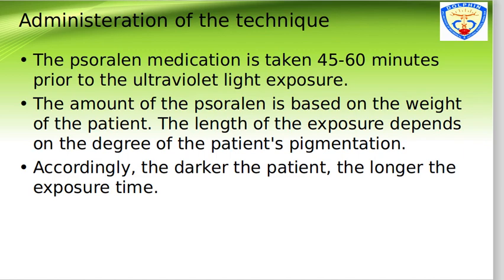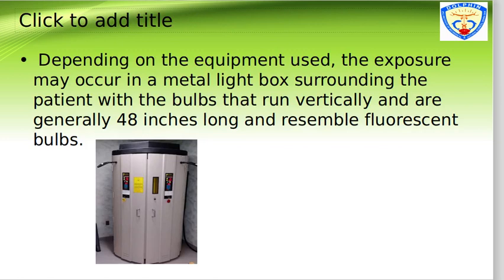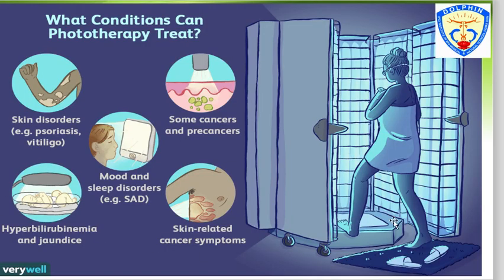In darker patients, exposure time must be increased. Depending on the equipment used, the exposure may occur in a metal light box surrounding the patient, with bulbs running vertically, generally 48 inches long, resembling fluorescent bulbs. The patient is sent inside this chamber for treatment. The eyes and genital organs are protected, while the rest of the body is exposed to ultraviolet radiation.